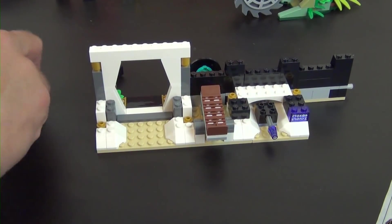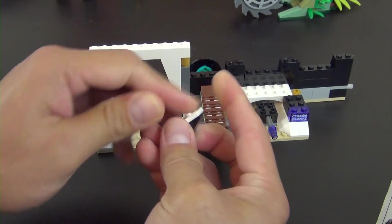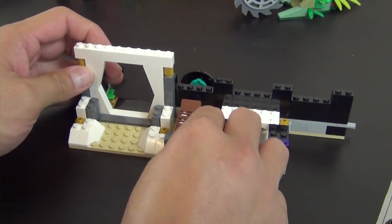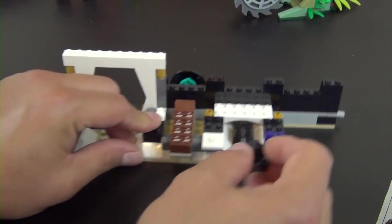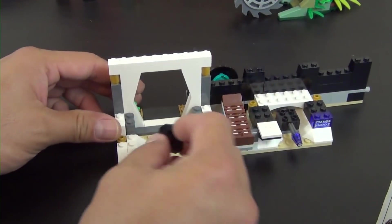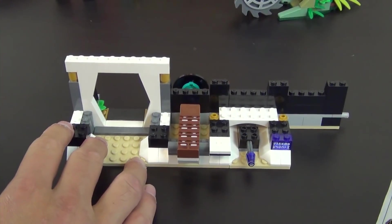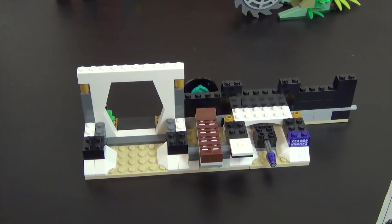All right, so next is this inverted slope, jumper tile there, two more bricks, one here and one here. All right, so that completes our second instruction book and our second bag of parts. Let's move on to bag number three right now.